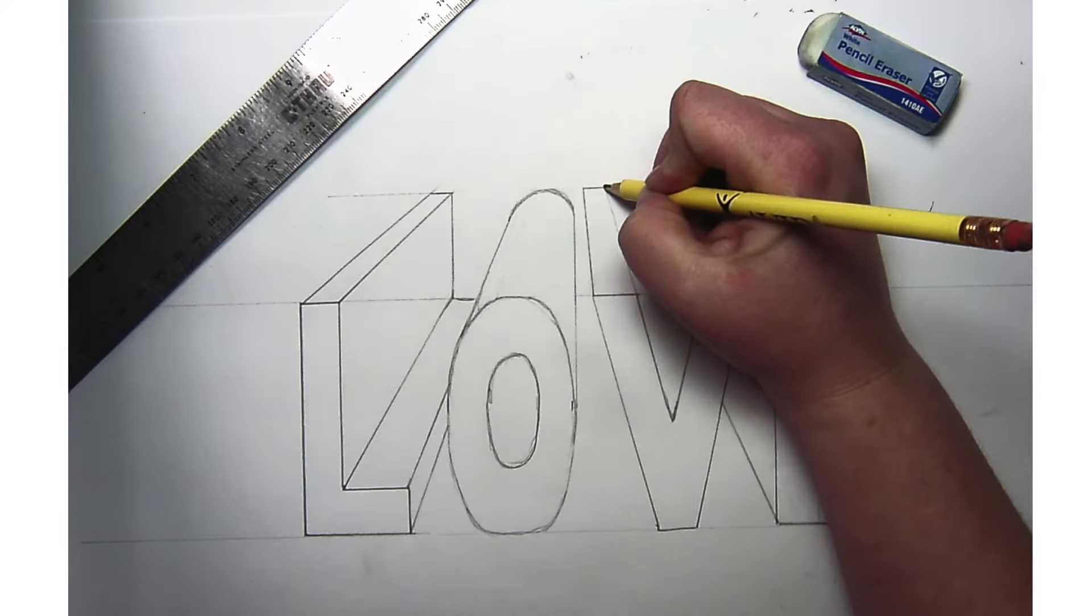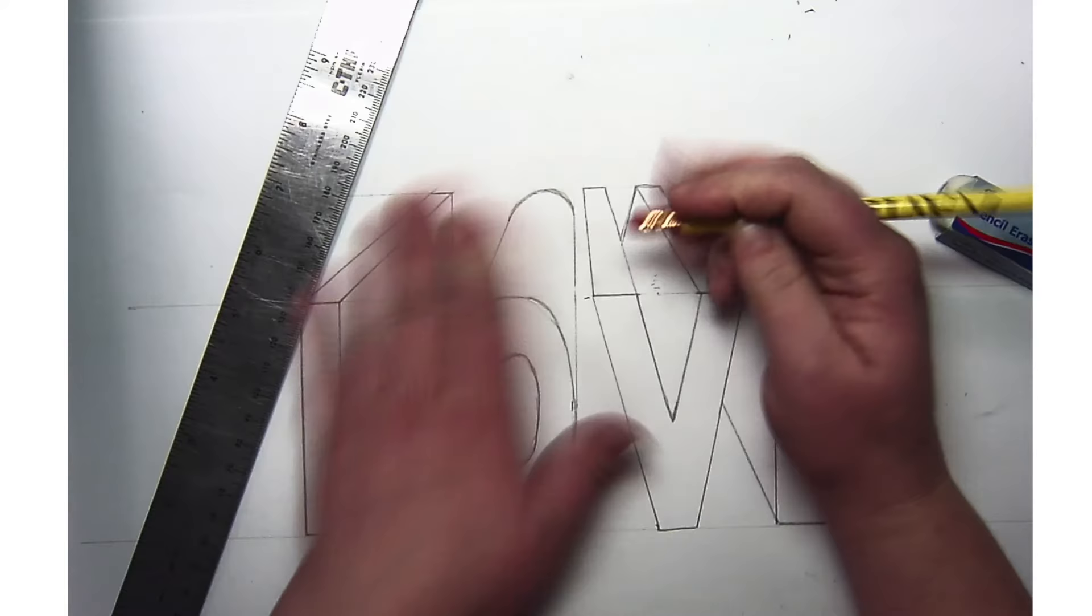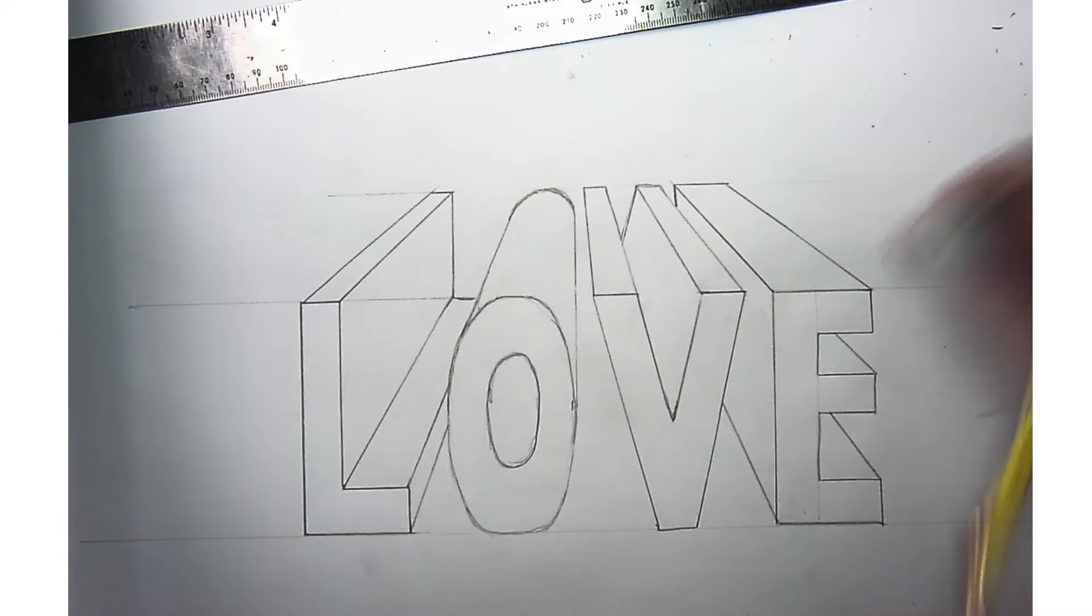Now my V is just straight across - a straight roof. But here this angle I'm going to continue, so the angle at the front of the V is the same angle that I use for the back of the letter. And then my E just goes straight across and down there.